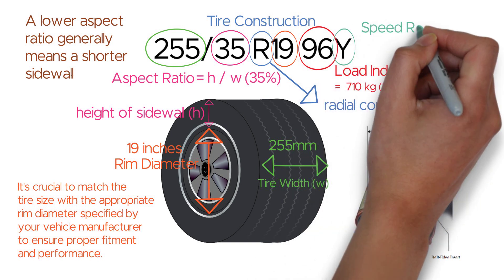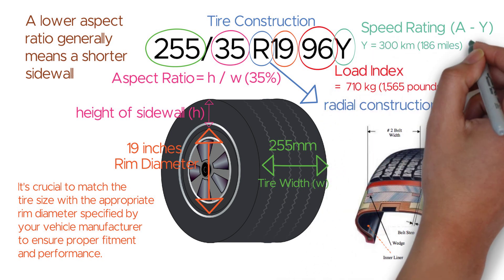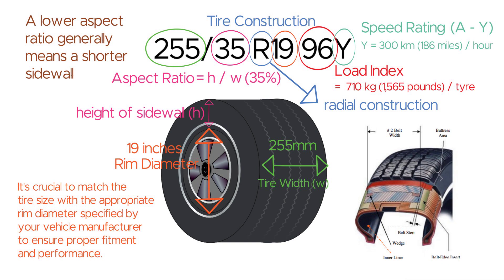The letter Y represents the speed rating. It indicates the maximum speed capability of the tire when properly inflated and under load. Speed ratings range from A, the lowest, to Y, the highest, with each letter corresponding to a specific maximum speed. In this case, a speed rating of Y means the tire is rated for speeds up to 300 km/h, which is 186 miles per hour.